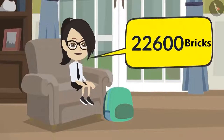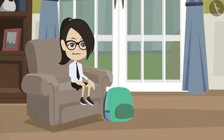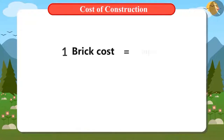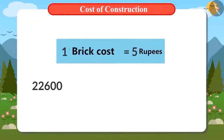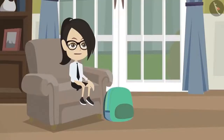Now we know that a total of 22,600 bricks will be used. First, let's find how much they would cost us. A brick costs 5 rupees. So, to find the value of 22,600 bricks, we will multiply 22,600 by 5.